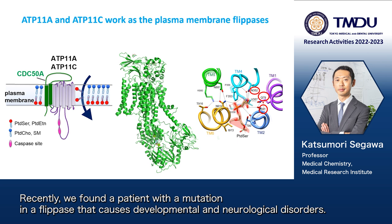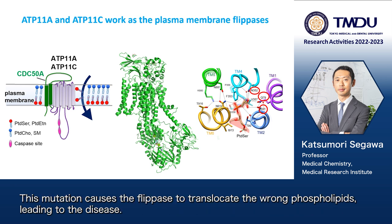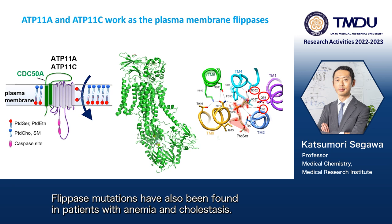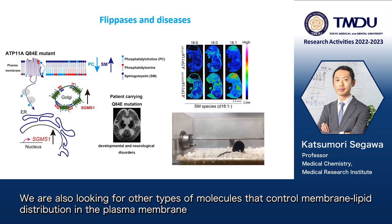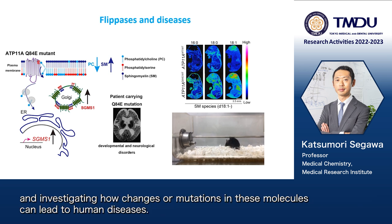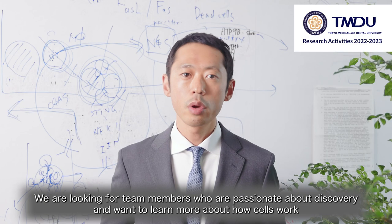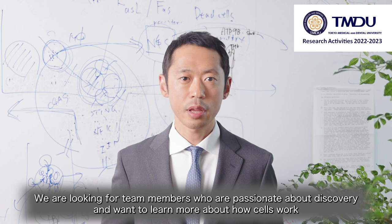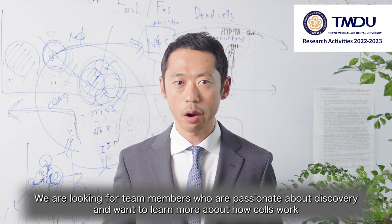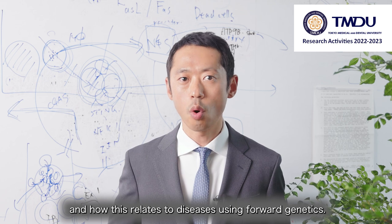Recently, we found a patient with a mutation in the flippase that causes developmental and neurological disorders. This mutation causes the flippase to translocate the wrong phospholipids, leading to the disease. Flippase mutations have also been found in patients with anemia and cholestasis. We are also looking for other types of molecules that control membrane lipid distribution in the plasma membrane, and investigating how changes or mutations in these molecules can lead to human diseases. We are looking for team members who are passionate about discovery and want to learn more about how cells work and how this relates to diseases using forward genetics.